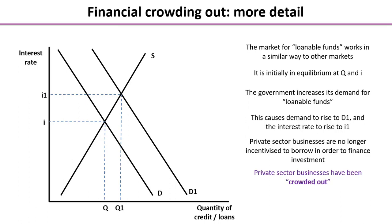Private sector businesses have been crowded out. Overall, there's going to be no increase in real GDP as a result of the government spending — the amount of investment available has just been swapped, with the government doing more at the expense of the private sector.